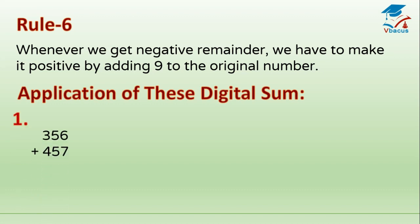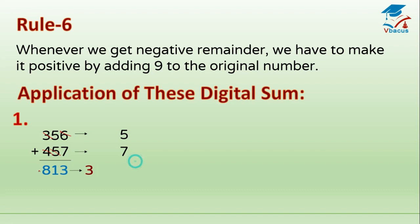Let us check for addition. 356 plus 457 equals 813. Digital sum of 356: cancel 3 plus 6 which becomes 9, leaving 5. Digital sum of 457: cancel 4 plus 5 which is 9, leaving 7. Digital sum of 813: cancel 8 plus 1 which is 9, leaving 3. Now add 5 and 7 to get 12, and 1 plus 2 also becomes 3. Both sides give 3, so our answer is verified.